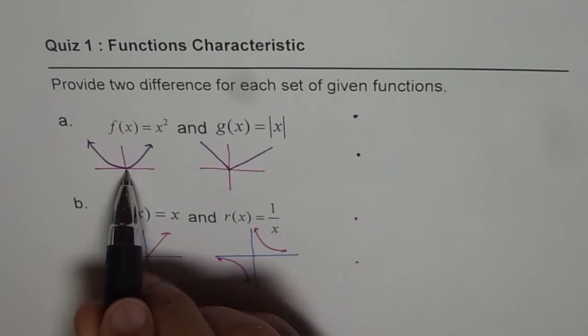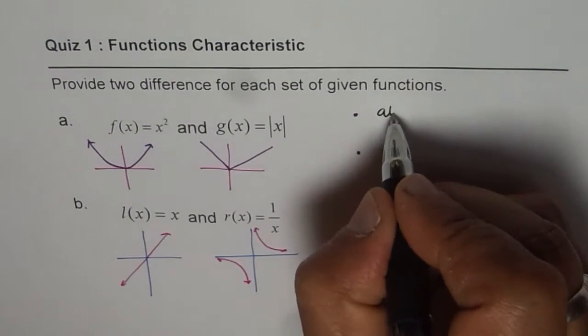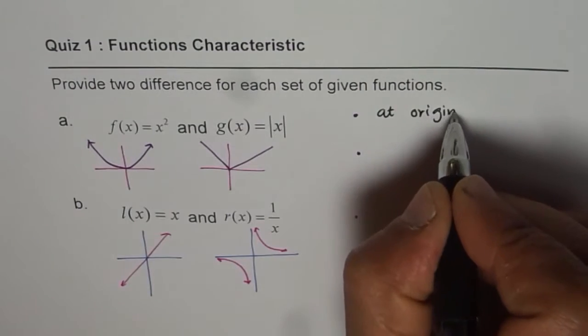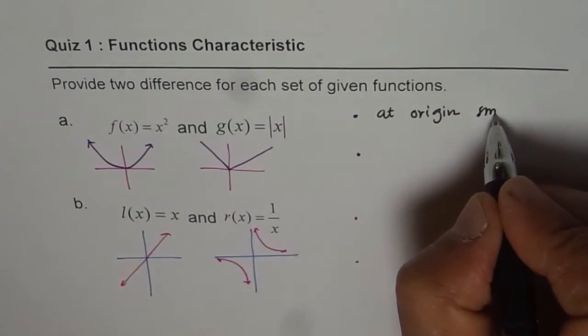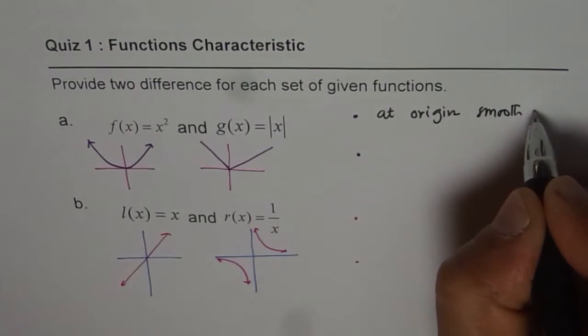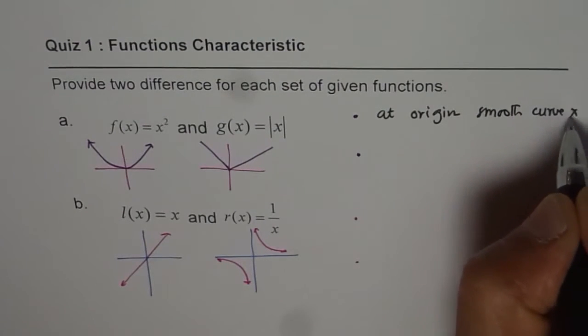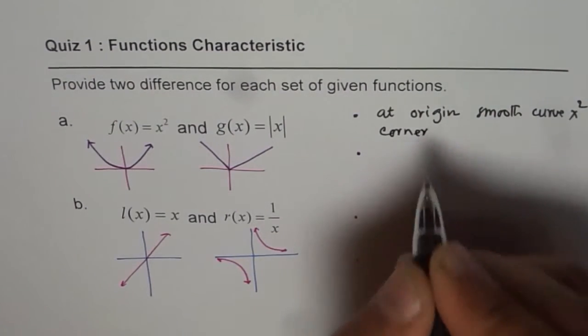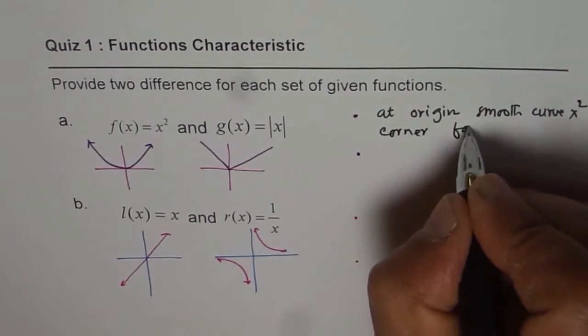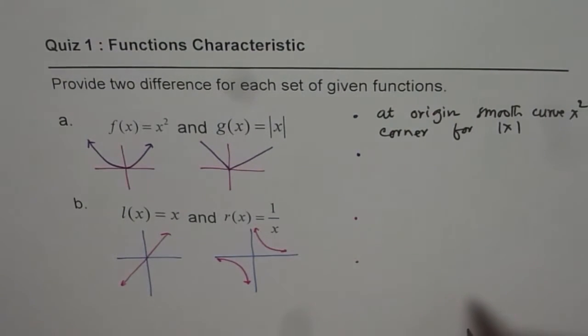This is a smooth curve. So at origin we have smooth curve for x squared and a corner for absolute x. So that is one difference.